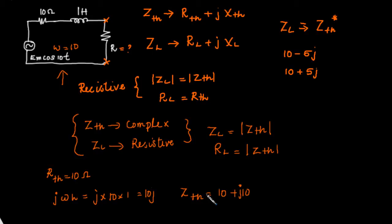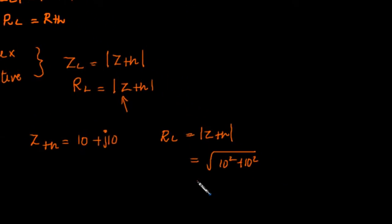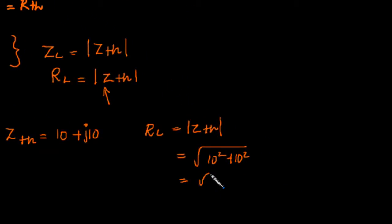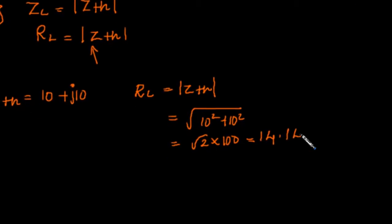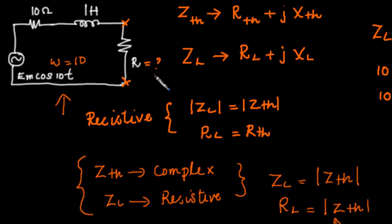We have found ZTH. Now we have to find RL, which means we need to find the modulus of ZTH so that maximum power is transferred. That will be √(10² + 10²) = √(2 × 100) = 14.14 ohms. So if R = 14.14, we can maximize the power transfer to it.